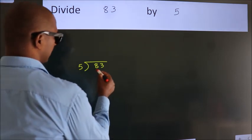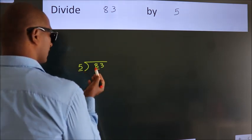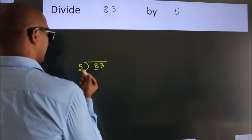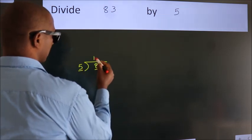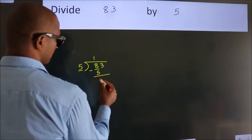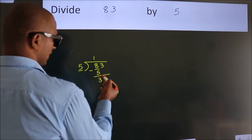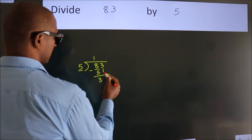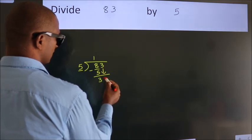Here we have 8, here 5. A number close to 8 in 5 table is 5 once 5. Now we should subtract. We get 3. After this, bring down the beside number. So 3 down.